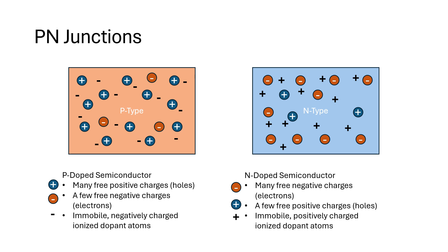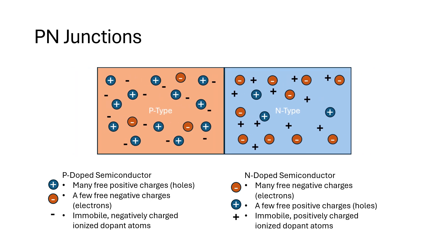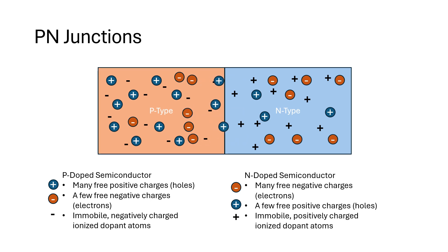Let's explore the technological basis for the SPAD, starting with the p-n junction. When we join together a p-doped semiconductor with an n-doped semiconductor, we get a gradient in free charges that redistribute. Specifically, in seeking equilibrium, excess electrons on the n-side diffuse to the p-side, and excess holes on the p-side diffuse to the n-side. This process continues until the left-behind fixed ionized dopants — positive on the n-side and negative on the p-side — form an internal electric field that prevents further diffusion. This is our depletion region.